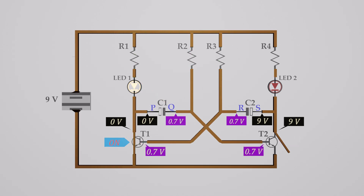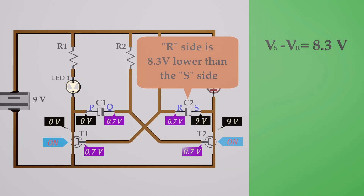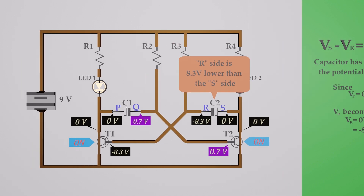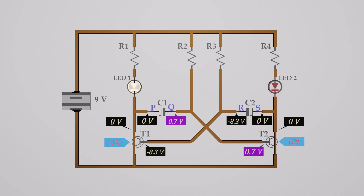When plate Q becomes 0.7 volts, the base of transistor T2 becomes 0.7 volts and T2 turns on. Now C2 had 0.7 volts on its left side R and 9 volts on its right side S — the left side was 8.3 volts lower than the right side. When T2 turns on, the voltage on the S side of C2 is suddenly pulled down to 0 volts. The internal charge of the capacitor does not change, so the R side keeps being 8.3 volts lower than the S side, which is minus 8.3 volts. With minus 8.3 volts on the base of transistor T1, T1 changes to off state. Now T1 is off and T2 is on, so LED1 turns off and LED2 turns on.